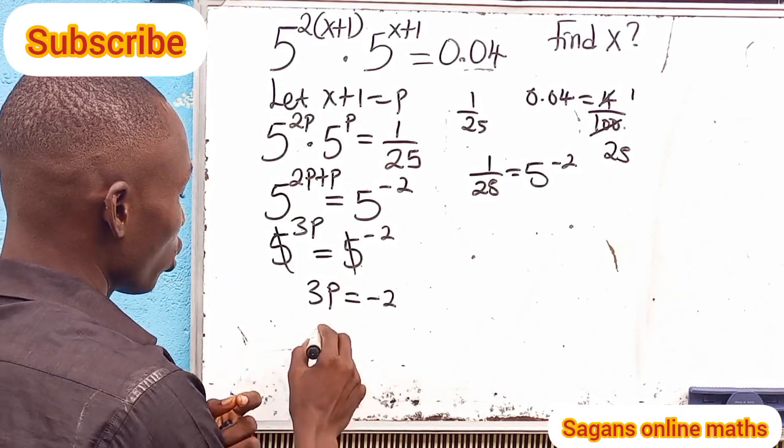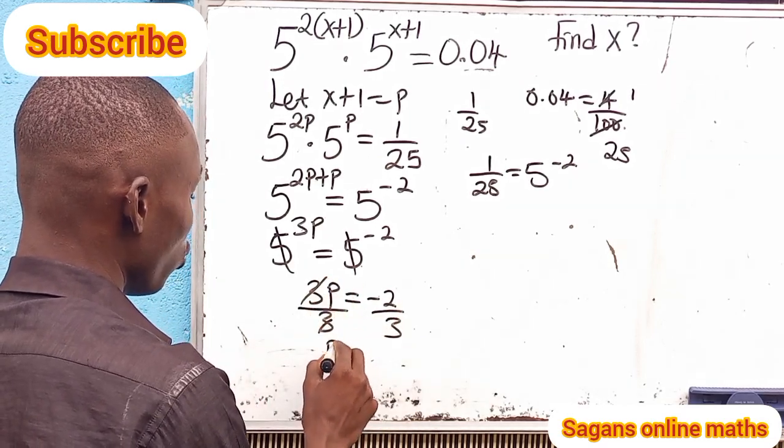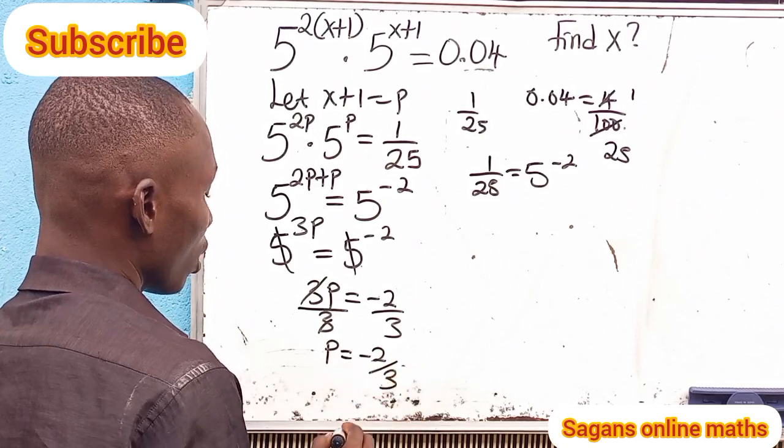We have -3p equals -2. Now to find p, we divide both sides by 3. This gives us p equals -2/3. This is the value of p.